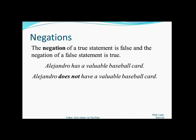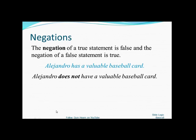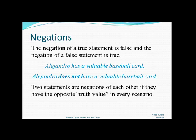Now let's talk about negations. The negation of a true statement is false, and the negation of a false statement is true. For example, 'Alejandro has a valuable baseball card.' The negation is 'Alejandro does not have a valuable baseball card.' These two statements are negations of each other — they have the opposite truth value in every scenario. If he does have a card, the first is true and the second is false. If he doesn't, the first is false and the second is true. Opposites.